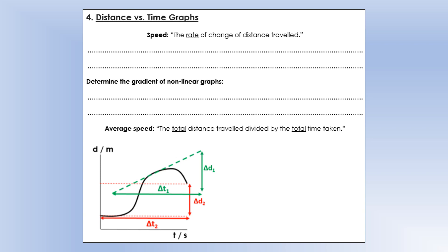In this video we're going to look at what we call the properties of motion and then finally look at resultant force. Properties of motion covers an object's location, how fast it's traveling, and its acceleration — that's how we usually describe the motion of an object. Let's start off with speed, which formally is the rate of change of distance traveled. On a distance versus time graph, speed is the gradient of that graph.